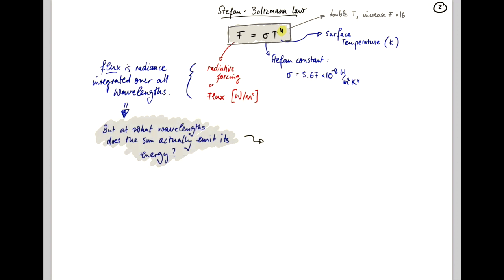And we can describe that by using another empirical relationship that's called Wien's law. And Wien's law tells us that the peak wavelength, lambda peak, is proportional to the inverse of the temperature of the body. So it's equal to B over T, where lambda peak is the wavelength at which our emission has its highest intensity.